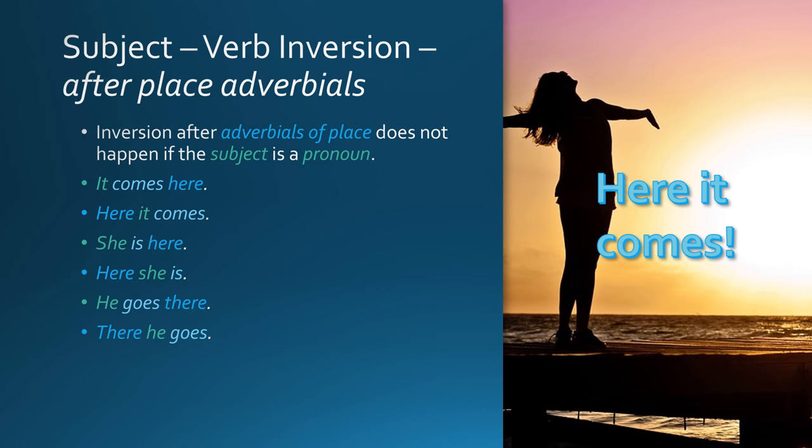Inversion after adverbials of place doesn't happen if the subject is a pronoun. For example: 'It comes here' — 'Here it comes.' 'She is here' — 'Here she is.' 'He goes there' — 'There he goes.' The word order changes but inversion of subject and verb does not occur with pronouns.